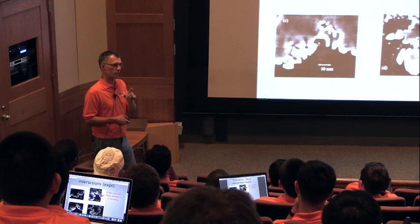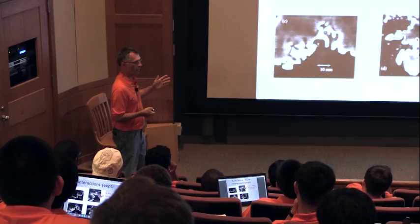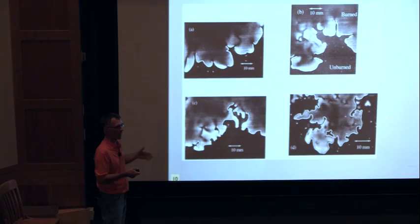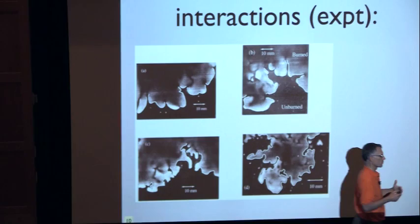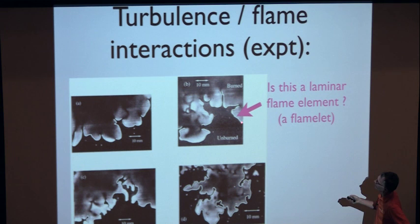Thermodiffusive instabilities can also create wrinkling — this morning you saw cellular flame shapes that increase flame surface without turbulence. But in turbulent flames most wrinkling is created by turbulent eddies. The key question is: when you zoom in on a small piece of flame, does it look like a laminar flame? If we can assume it does, we call that a flamelet. So you have to imagine: we know almost everything about the laminar flame, and now instead of a steady flow we're going to shake it with turbulence.